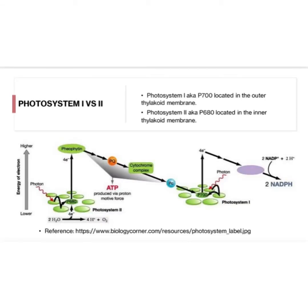The process begins at the photosystem 2 reaction center, as shown where the arrow is pointing. A photon from light energy from the sun or any other energy source will excite the chlorophyll molecule in the reaction center at P680. The reaction center gets its electron from water splitting at the bottom of the diagram, where water is split into protons, electrons, and oxygen. Oxygen is given off as a byproduct of photosynthesis.